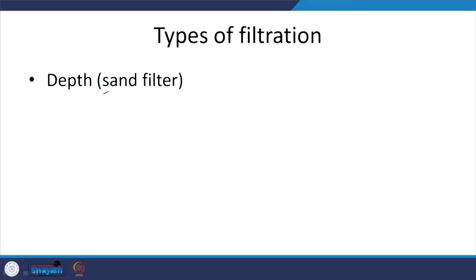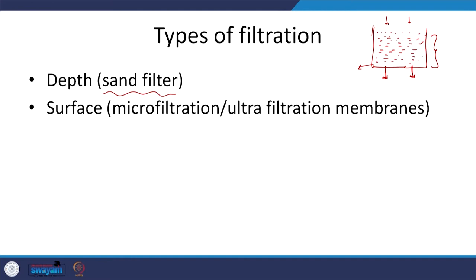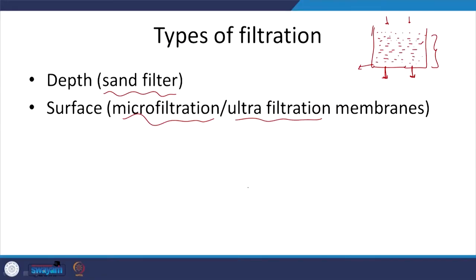A depth or sand filter has sand of relatively different diameter depending on whether it is a slow sand or rapid sand filter. Water comes in, particles are filtered out, and water leaves the system. This is called a depth filter — filtration occurs over the depth of the sand. In contrast, surface filtration uses microfiltration and ultrafiltration membranes, which we previously looked at in the context of different particle sizes.